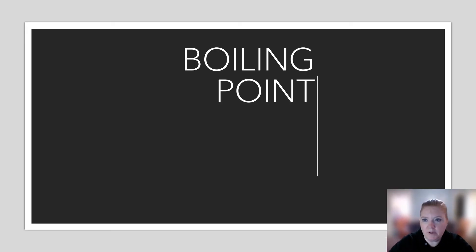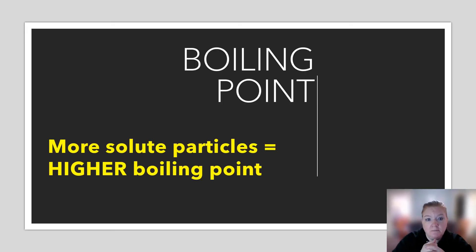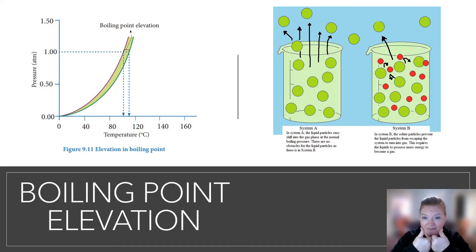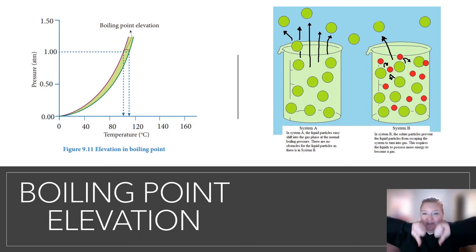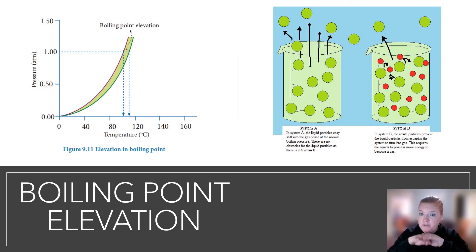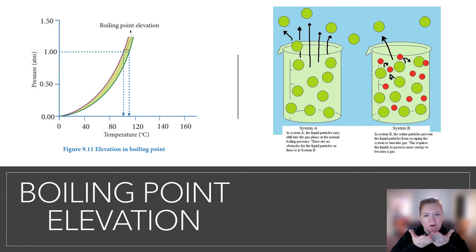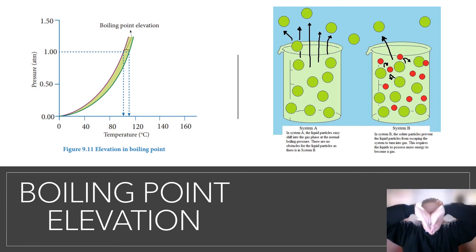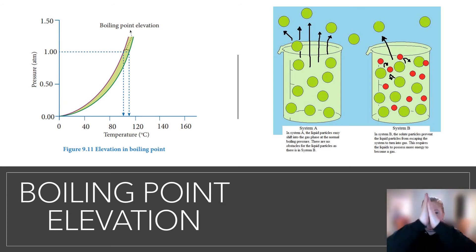Boiling point works the opposite way: more solute particles means a higher boiling point. This is called boiling point elevation. So to remember: freezing point is cold, so the freezing point goes lower — freezing point depression. Boiling point is hot, so the boiling point goes higher — boiling point elevation.